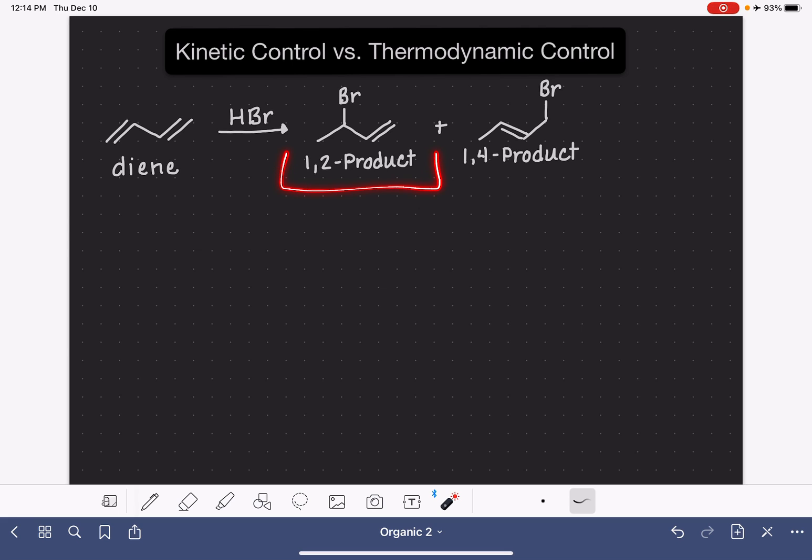One we call the 1-2 product and the other we call the 1-4 product. These numbers are simply referring to the carbon atoms of the diene. They have nothing to do with the numbers that we would use if we were trying to name the molecule.